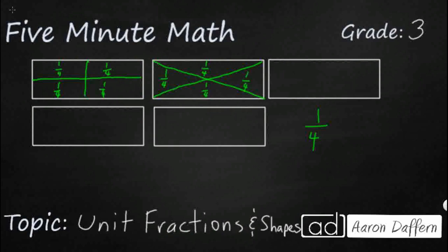What if we took a horizontal line, then another horizontal line, then another horizontal line? We've got four skinny horizontal strips that are each one fourth. We could do the same thing vertically — just some vertical lines — and these are all one fourth as well.